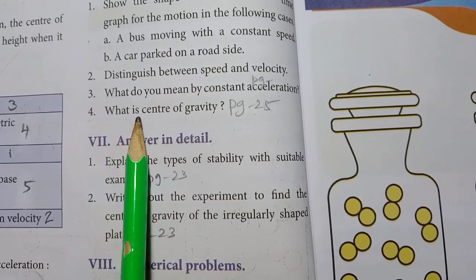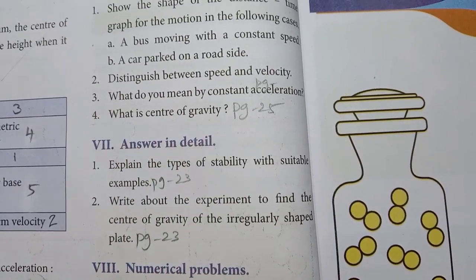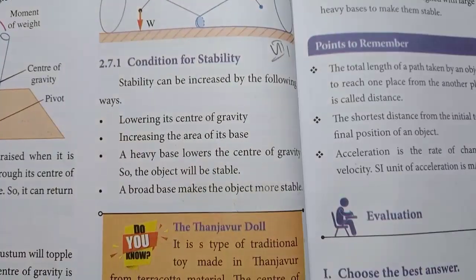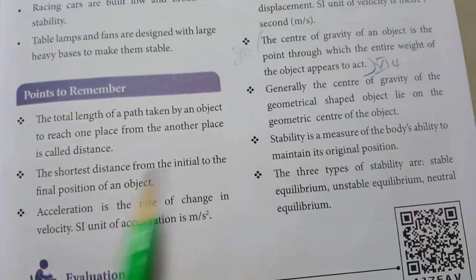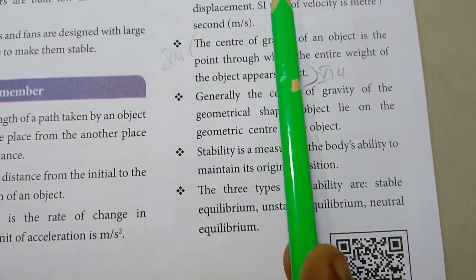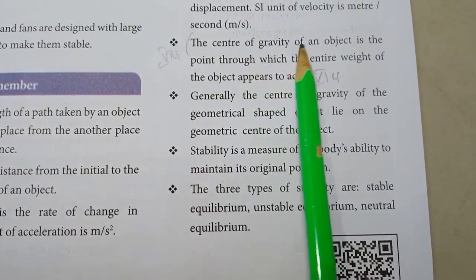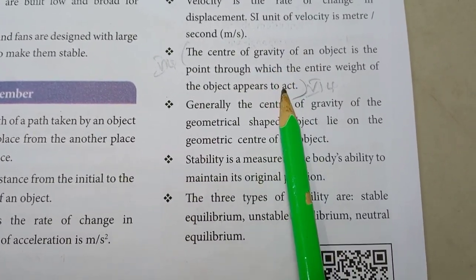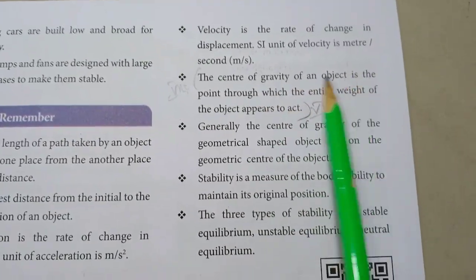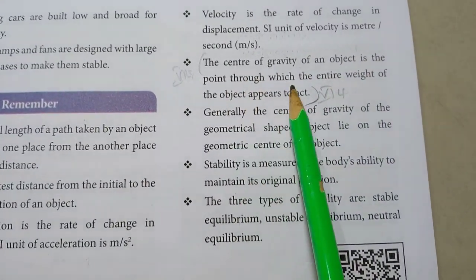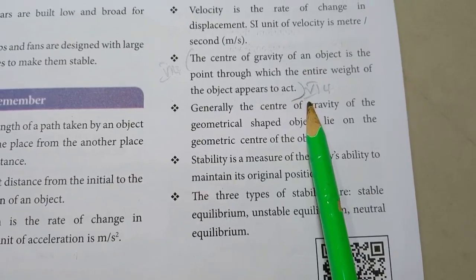4th one — what is the centre of gravity? Turn to page 25, points to remember. Centre of gravity of an object is the point through which the entire weight of the object appears to act.